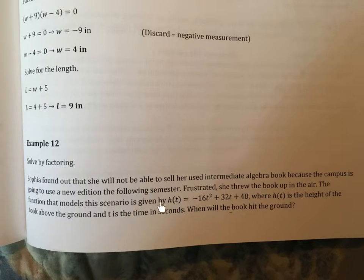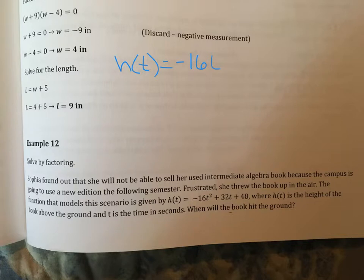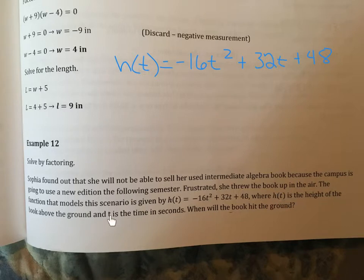This is the function we'll use. A quadratic function works just like a quadratic equation, but written in function notation. h of t equals negative 16t squared plus 32t plus 48. h stands for height, t stands for time. We're asked to find when — so we solve for t. To do that, we need to know h of t, which is the height.